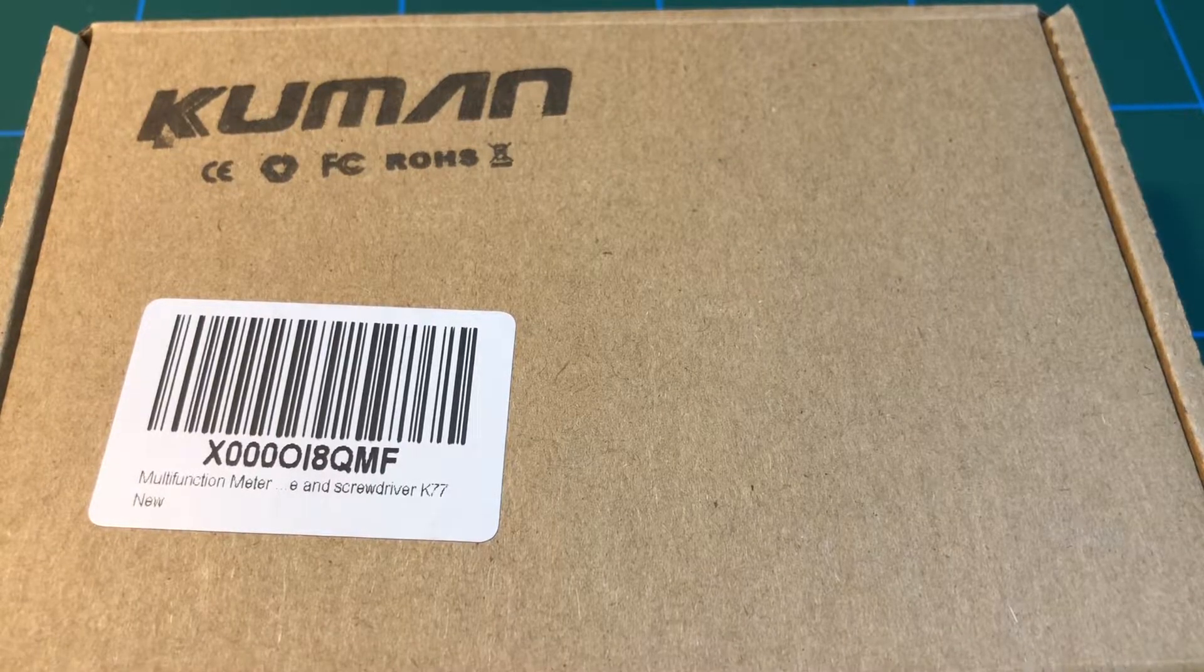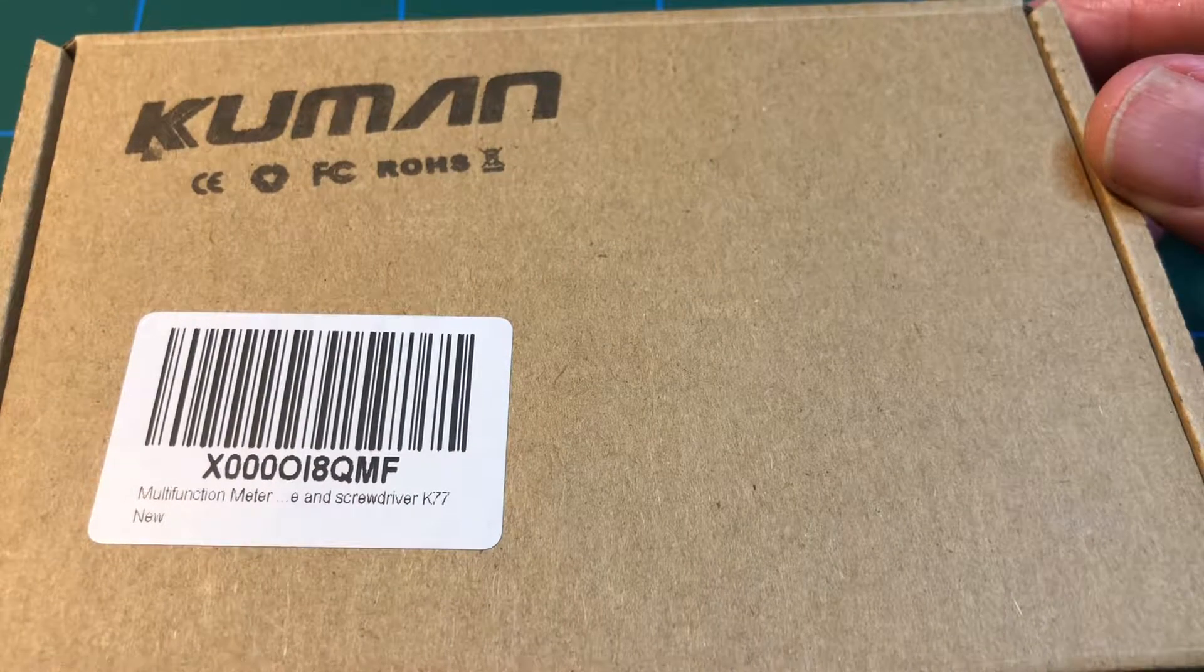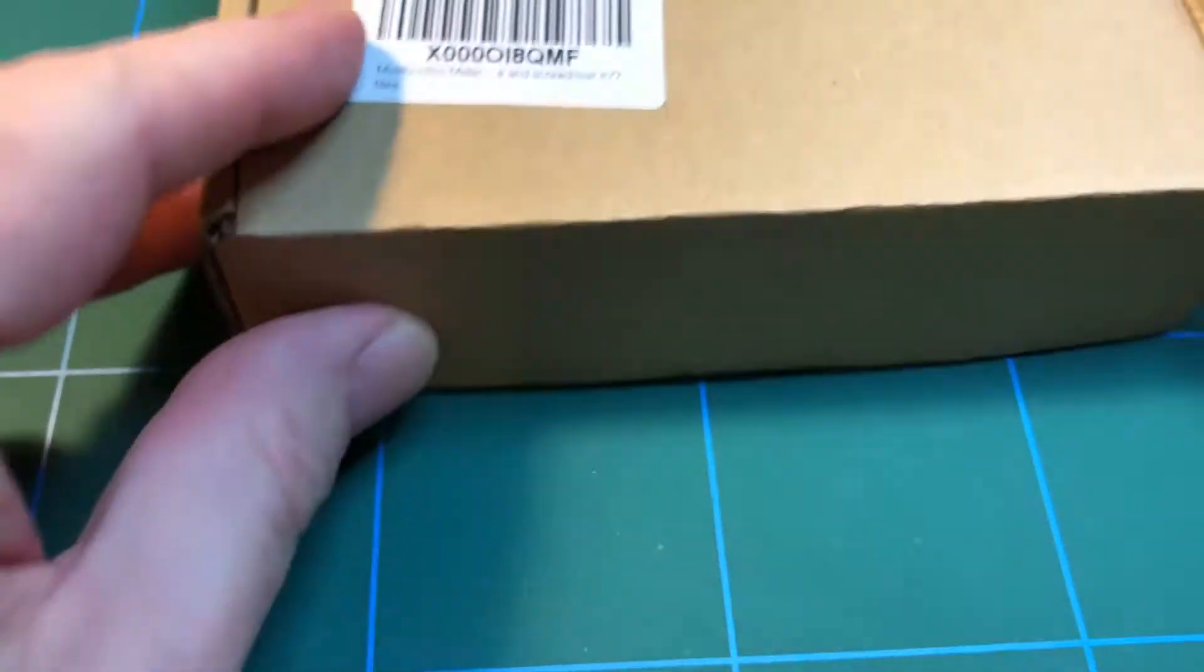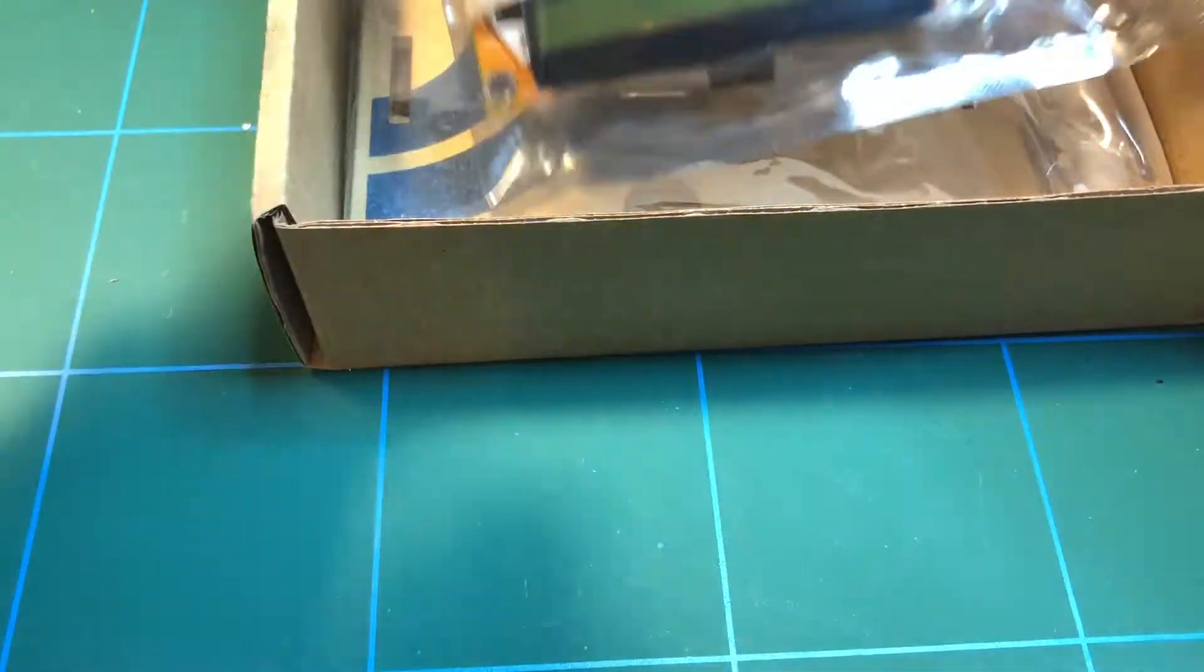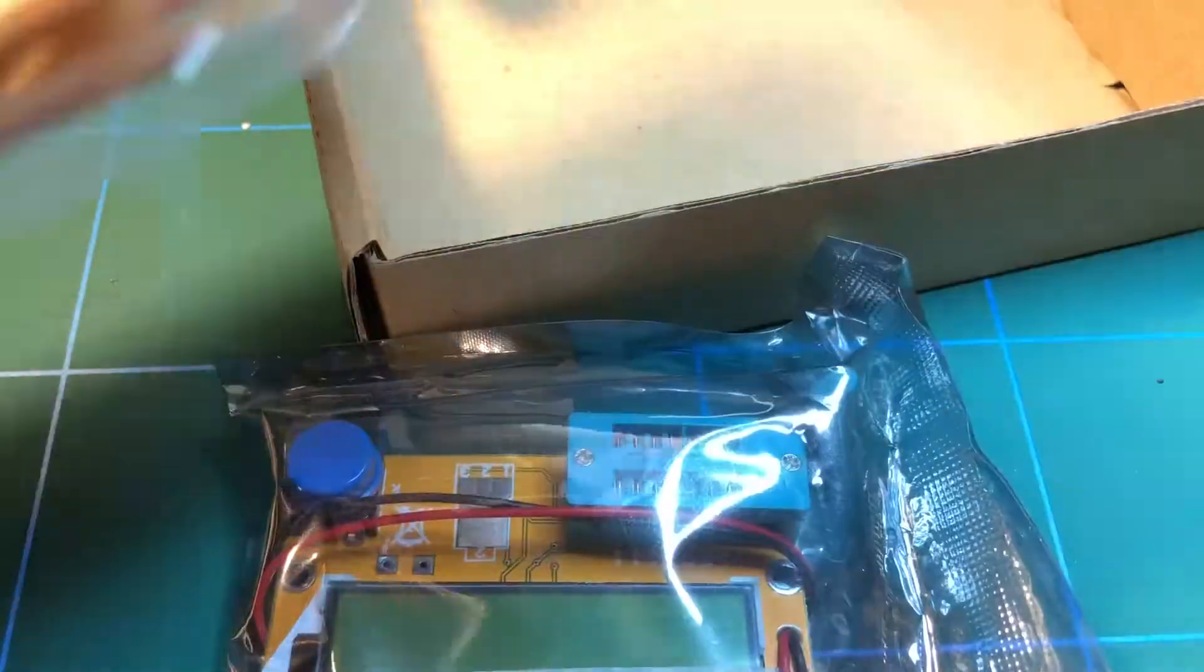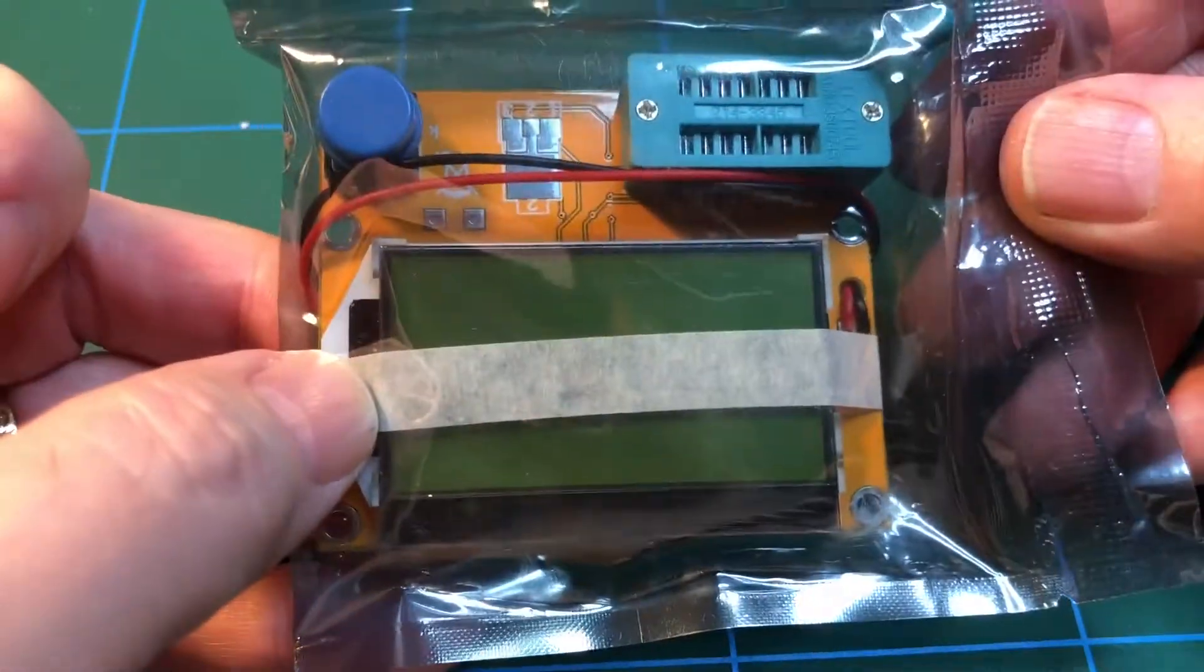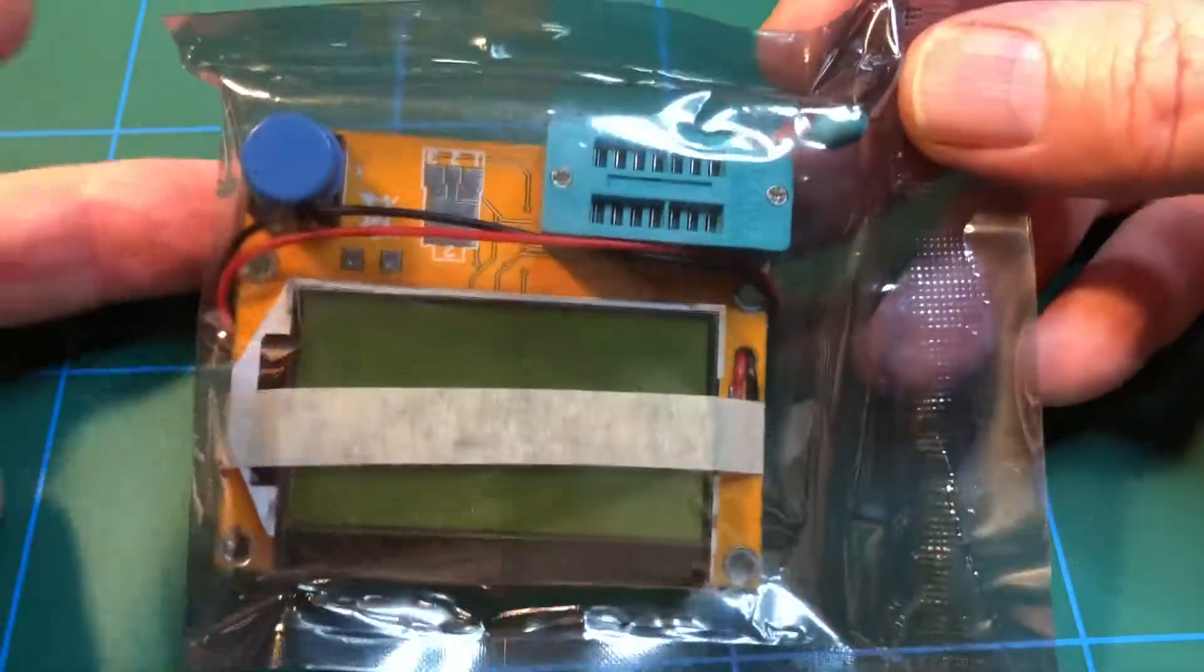Okay, something a little bit different this time. This is the Kuman multifunction meter and screwdriver. It's a little kit, not really one to solder together because it's already done. But it comes with the old traditional acrylic cases and that's the actual unit itself. And what it's for is for testing components, so resistors, capacitors and the like.